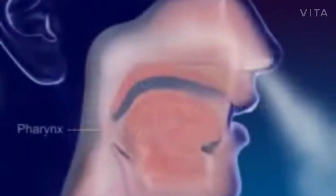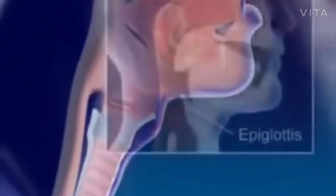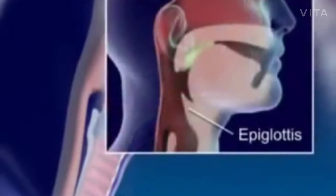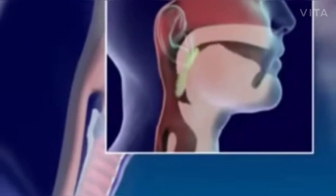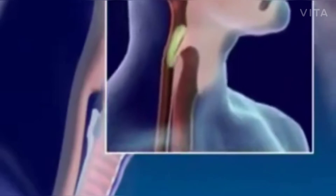Air moves into the pharynx, or throat, the common passageway for food and air. Air continues on to the larynx. The epiglottis, a flap of tissue in front of the larynx, closes off the larynx when swallowing to prevent food from entering.